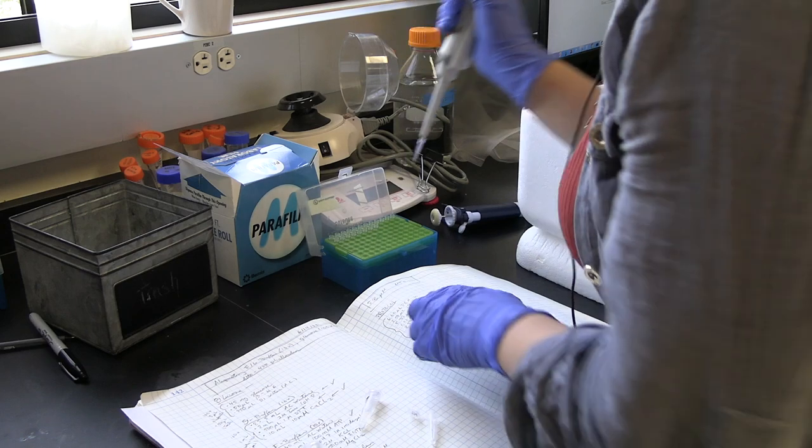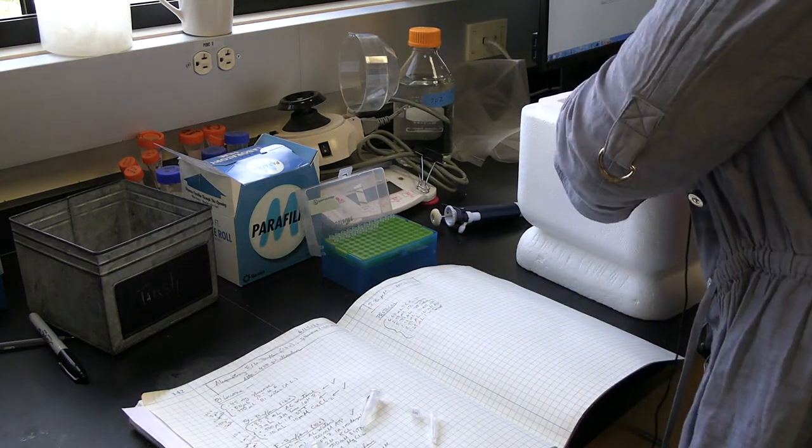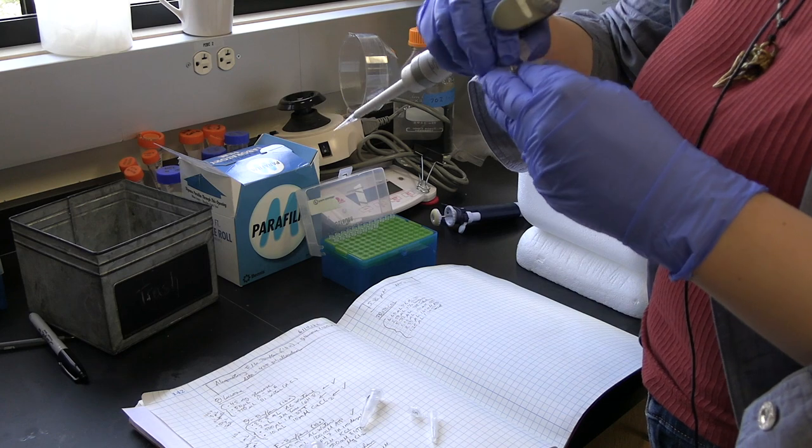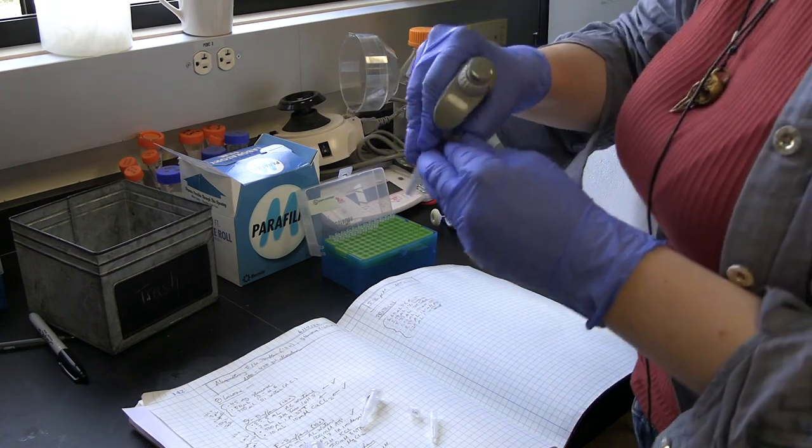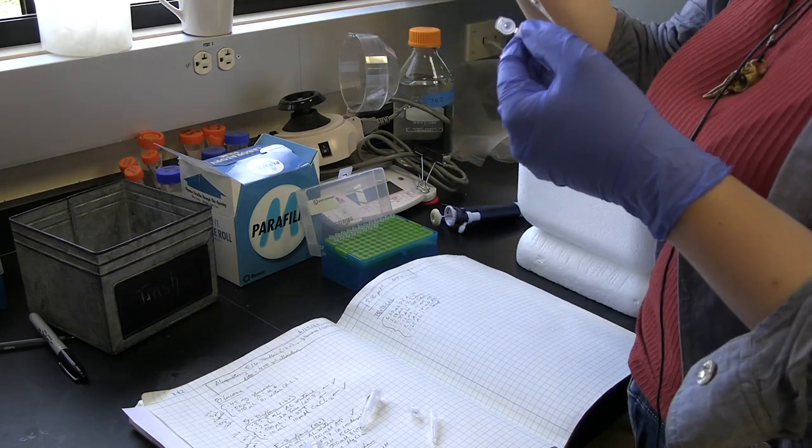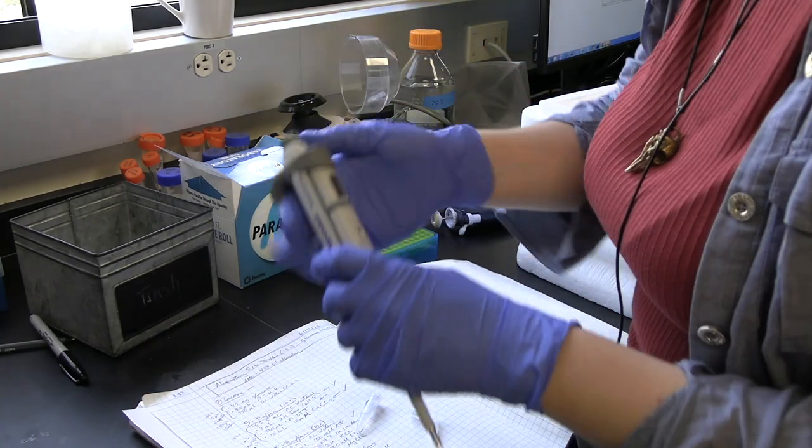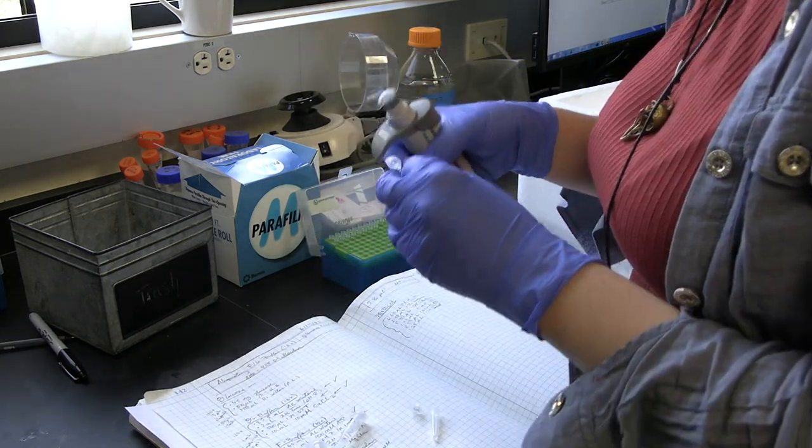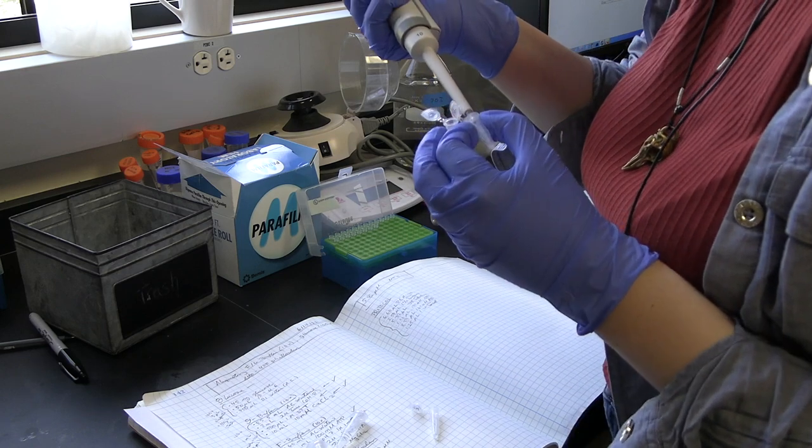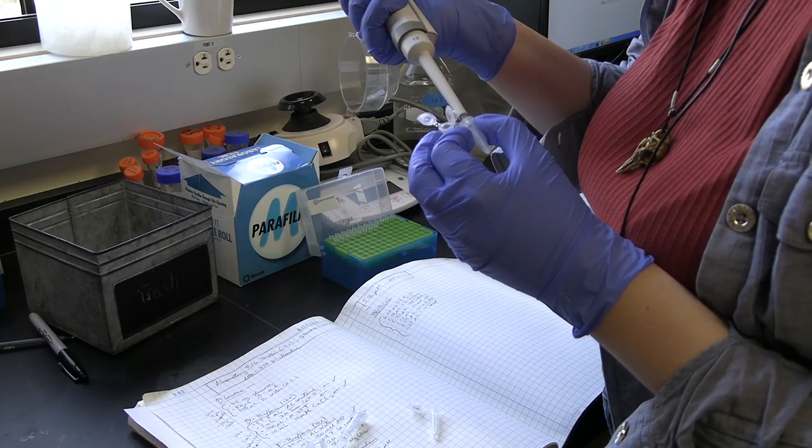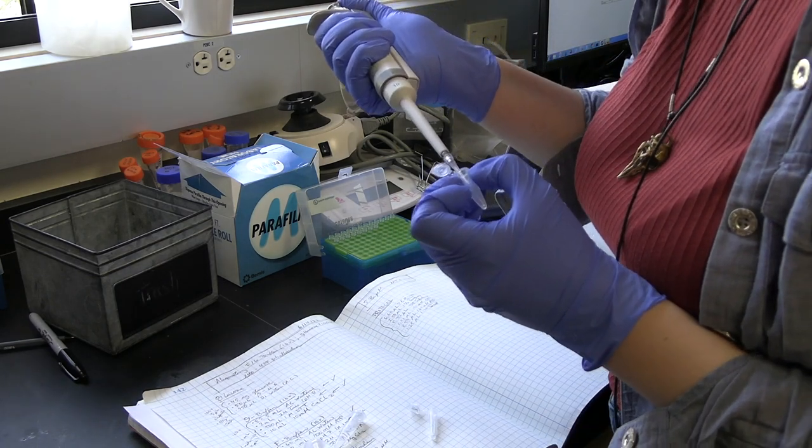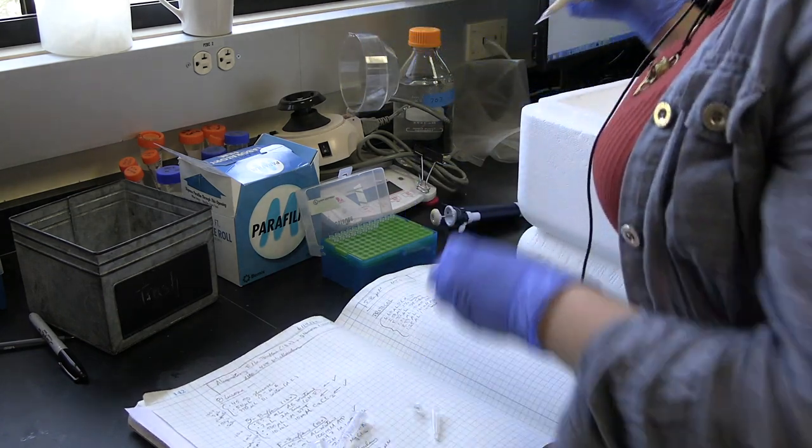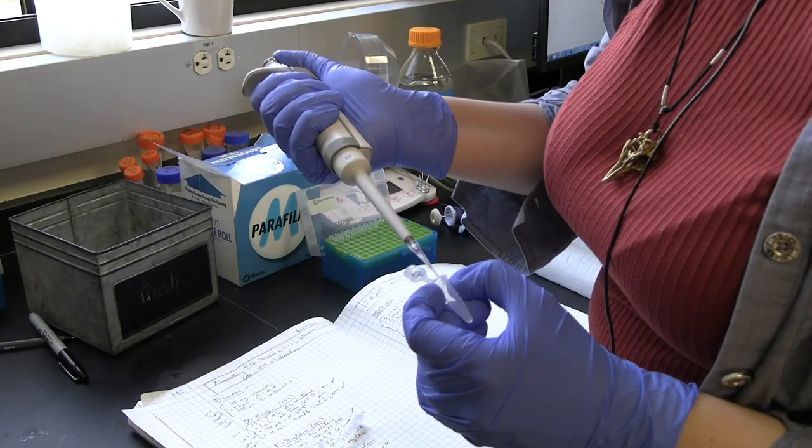Next thing we add is 5.32 microliters of 488 labeled tubulin. That means the microtubule dimers are labeled with a particle that fluoresces when 488 light is shined on it, and it emits at a longer wavelength, which will be green. There isn't enough in one aliquot because we make our aliquots around 3 microliters large, so I took a second one out of the minus 80 for this particular network. Add that to the sample.